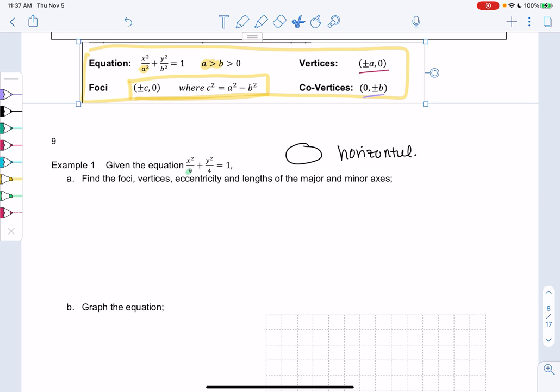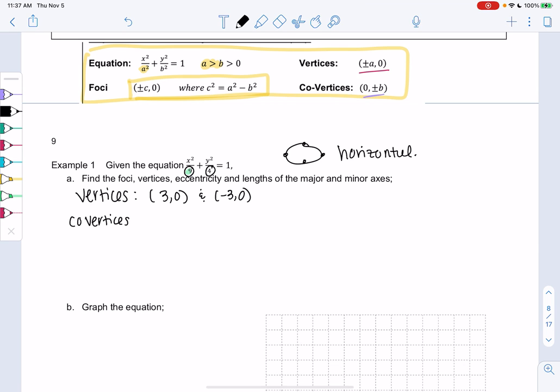So what do we know? I like to do the vertices first. I actually find them easier than the focus. So the vertices: since x squared is over 9, that would be 3. So the vertices would be (3, 0) and (-3, 0). I like the co-vertices, even though the book doesn't talk about it too much, because it just tells you - the vertices tell me left and right, but it's nice to know how far up and down. So the co-vertices come from y. So since y squared is over 4, they would be at (0, 2) and (0, -2).